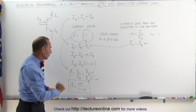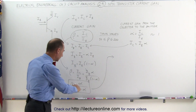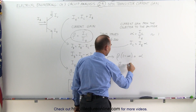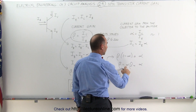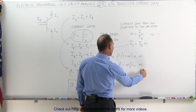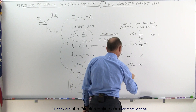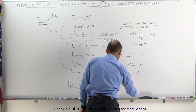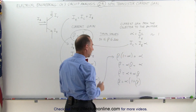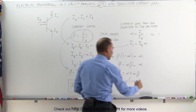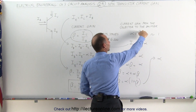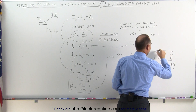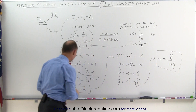We can also take this equation and solve it for alpha. Multiplying both sides: beta × (1 − alpha) = alpha. Expanding: beta − alpha × beta = alpha. Rearranging: beta = alpha + alpha × beta. Factoring out alpha: beta = alpha × (1 + beta). Dividing both sides by (1 + beta), we get that alpha — the current gain from the collector relative to the emitter — equals beta divided by (1 + beta). So we have both forms of the relationship between alpha and beta.